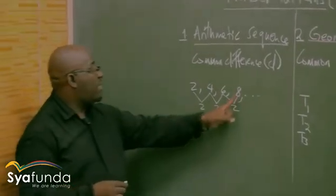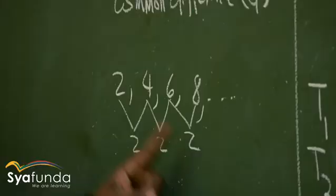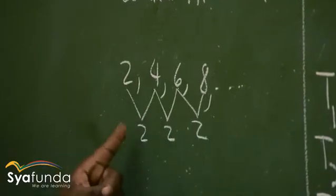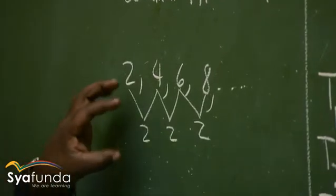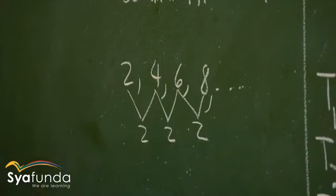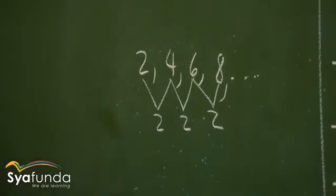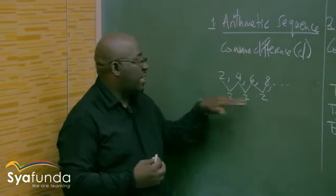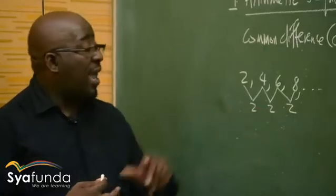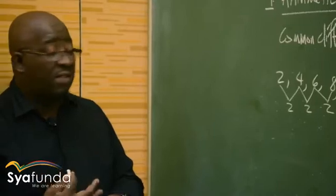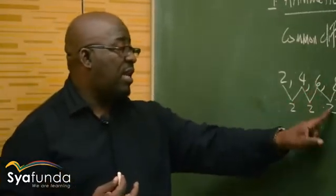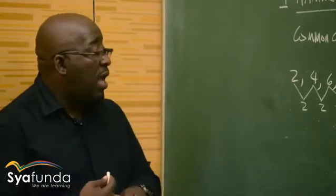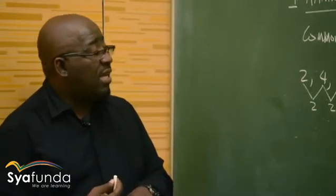What do we notice here? Whenever I subtract one term from the next, I get the same thing each time. So this sequence has got the common difference. In this particular case it is 2. That is what we refer to as D — it is the first common difference, coming from the first line when we are subtracting.